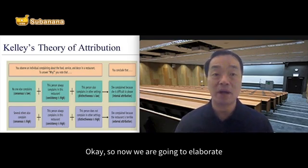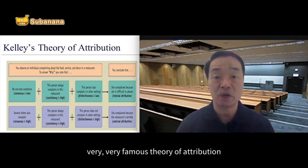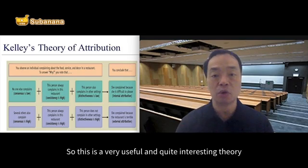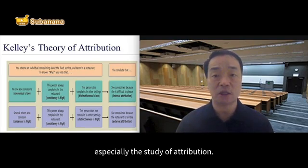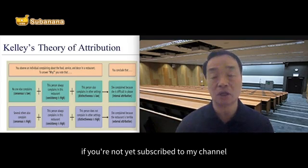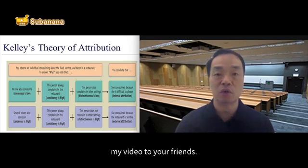So now we are going to elaborate a very famous theory of attribution — Kelley's theory of attribution. This is a very useful and quite interesting theory of Social Psychology, especially in the study of attribution. Before we start, if you haven't yet subscribed to my channel, please do so. Please like and share my video with your friends.